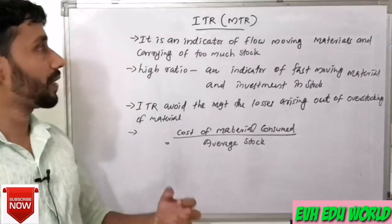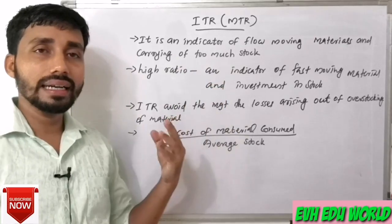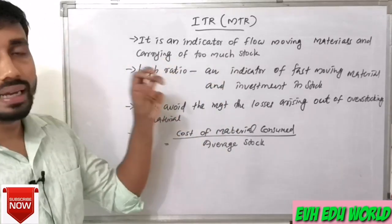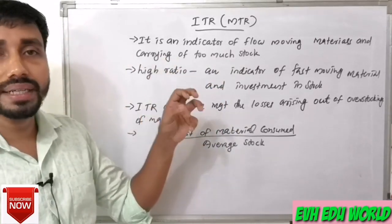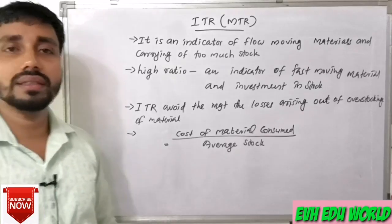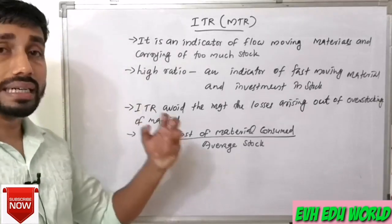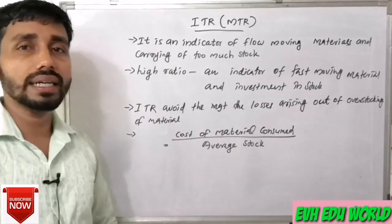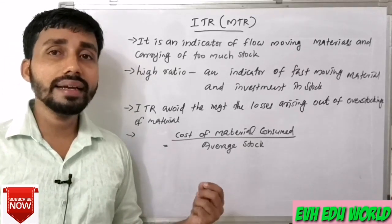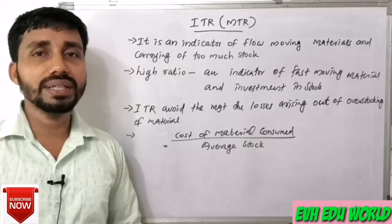The first technique is called Inventory Turnover Ratio, which is also called MTR, Material Turnover Ratio. The material turnover ratio is an indicator of the force of moving material.